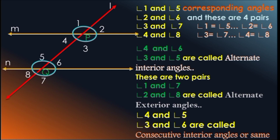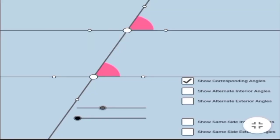Now look at another pair. Angle 4 and Angle 5, and Angle 3 and Angle 6 are called consecutive interior angles, or same-side interior angles. These are the main types of angles when a transversal intersects two lines at two distinct points: corresponding angles, alternate interior angles, alternate exterior angles, consecutive interior angles, and same-side exterior angles.